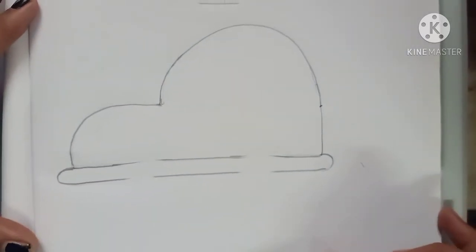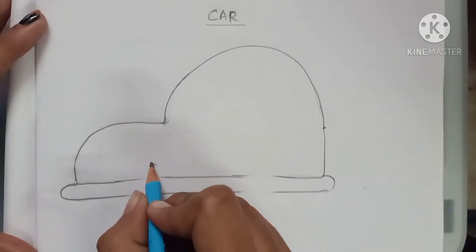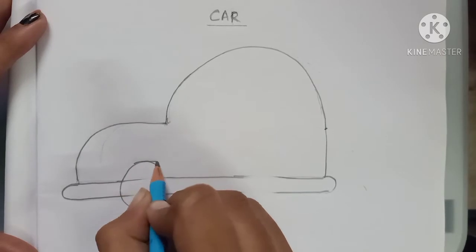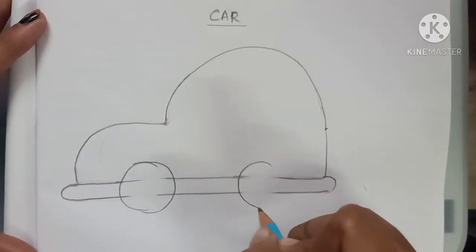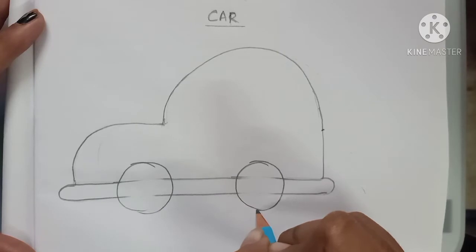We are going to make two wheels, that is two circles. One, two.